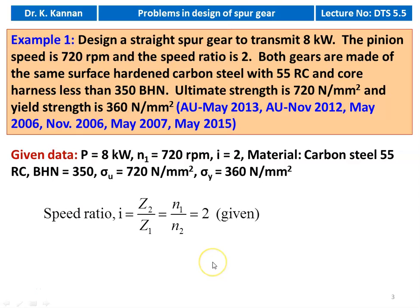First calculation is the speed ratio. Given in the problem, it is 2. So Z2 by Z1 equals N1 by N2, which is equal to 2. Z2 is the number of teeth on the gear, Z1 is the number of teeth on the pinion, N1 is the speed of the pinion, and N2 is the speed of the gear.